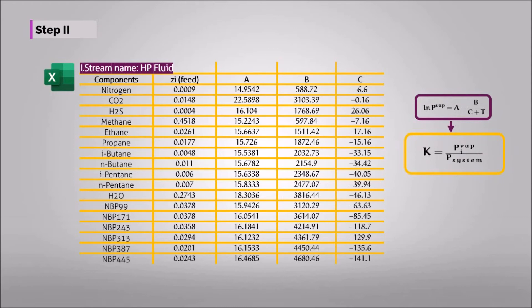After that on Excel, you should create V over F void cell, and generate the values for each of the component by using the provided formula. As previously mentioned, this formula needs to be satisfied. Therefore, the void cell needs to be determined, which shows the value of V over F.